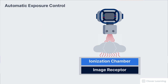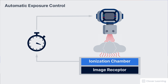When an exposure is initiated, x-rays begin flowing through the patient towards the image receptor. The AEC system includes an ionization chamber, which is a gas-filled cavity used to measure radiation. The ionization chamber is located between the patient and the receptor, within the table or wall-bucky assembly. Once the ionization chamber measures the appropriate amount of exposure, the AEC system sends a signal to the exposure timer and stops the exposure.